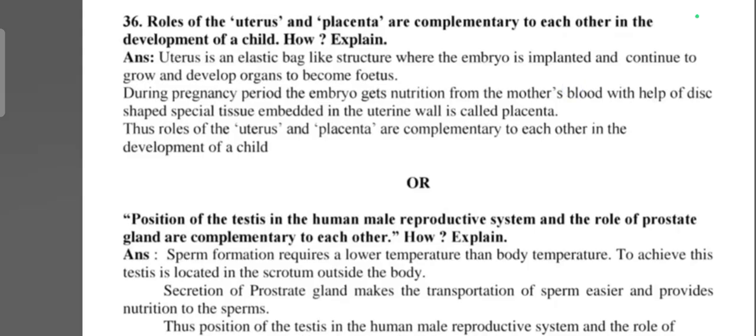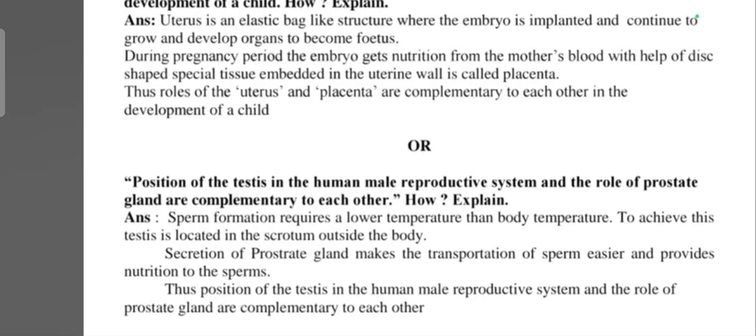Question number twenty-six: role of uterus and placenta are complementary to each other in the development of child. How? Explain. Uterus is an elastic bag-like structure where the embryo is implanted and continues to grow and develop the organs to become fetus. During pregnancy period, an embryo gets nutrients from the mother's blood with the help of a disc-shaped special tissue embedded in the uterine wall called the placenta. Thus, role of the uterus and placenta are complementary to each other in the development of child. Or, position of testis in the human male reproductive system and the role of the prostate gland are complementary to each other. How? Explain.